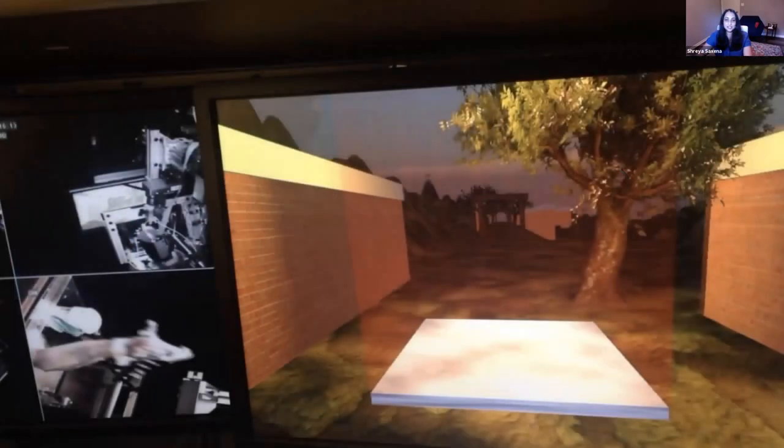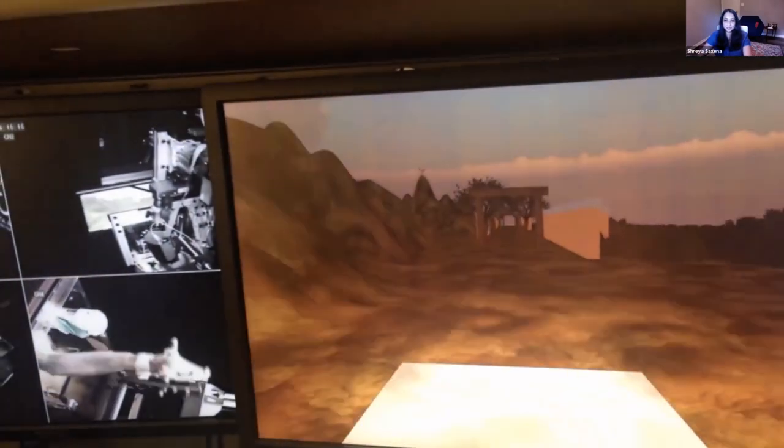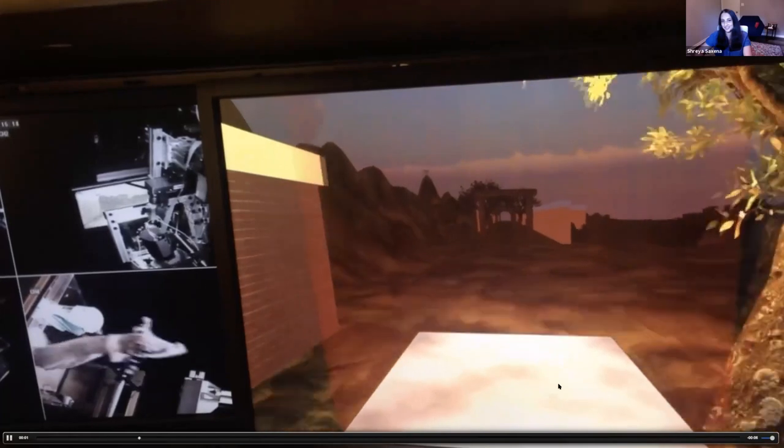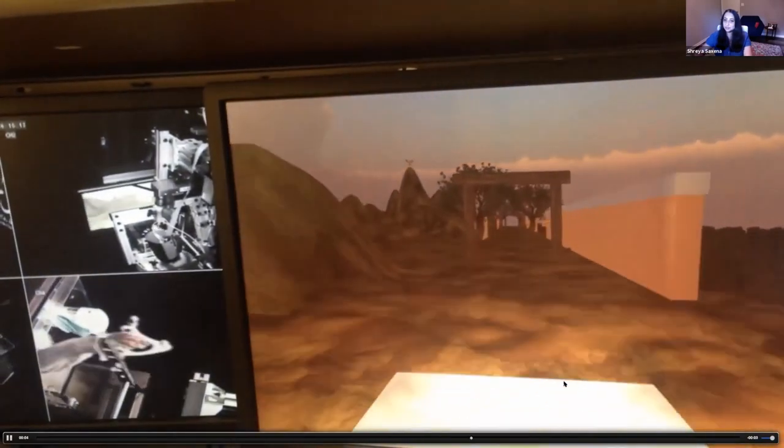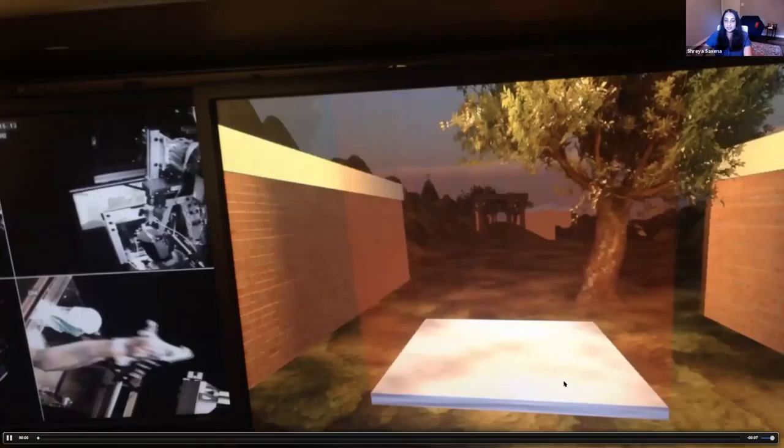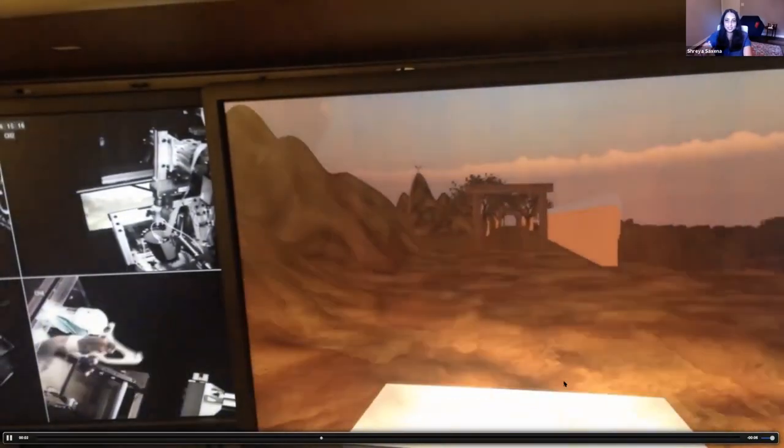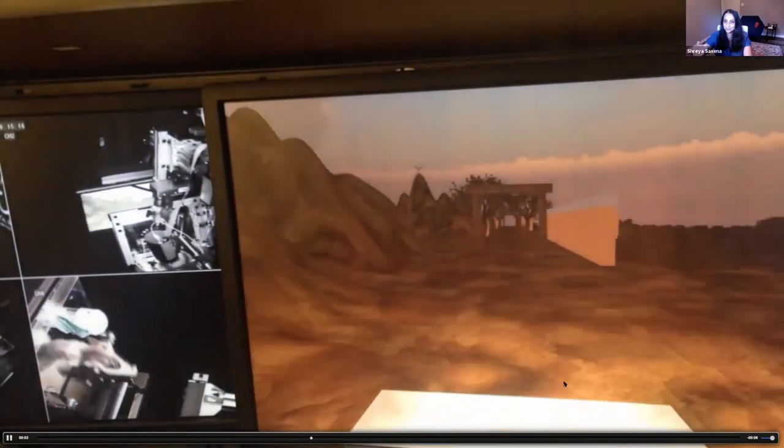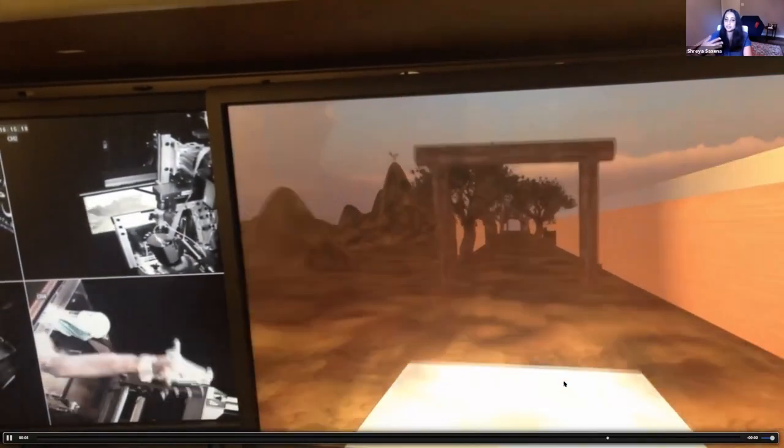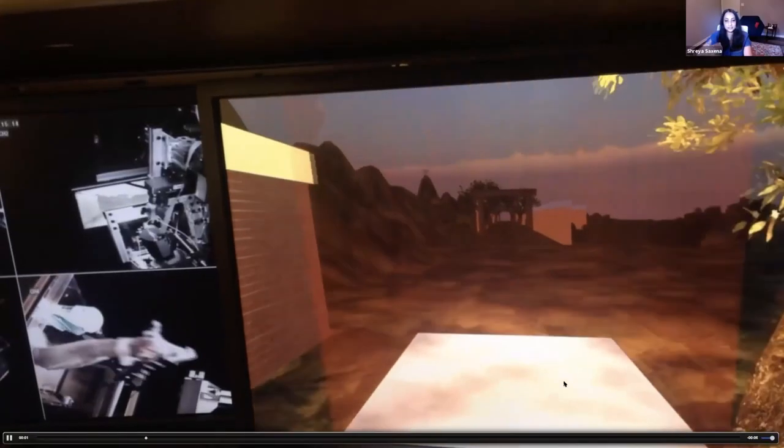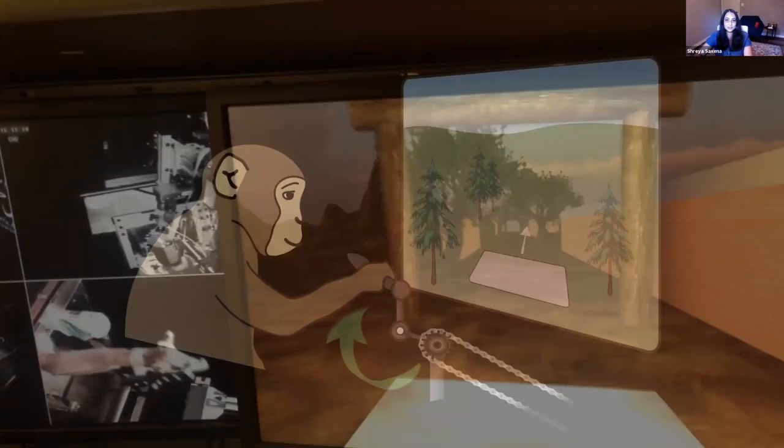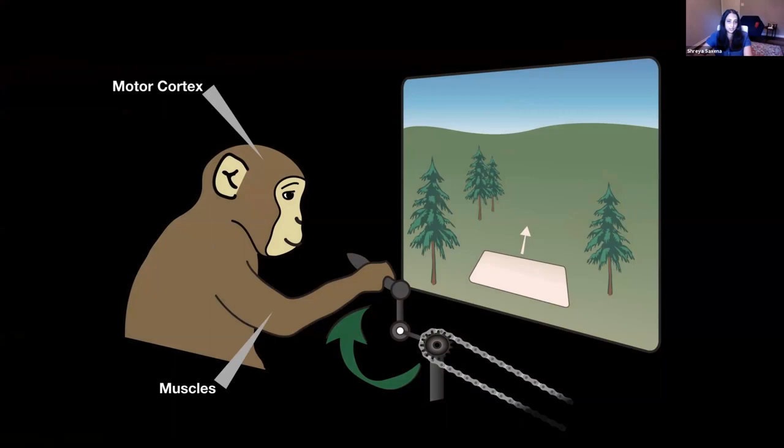So to answer that question, a colleague, Abigail Russo at Columbia in Mark Churchland's lab trained two monkeys to cycle through a virtual environment while tracking the target. You see the target here on the screen. The target was continuously moving at different speeds. And in addition, depending on the color of the landscape, the monkey cycles forwards or backwards to produce the movement. You may be familiar with the cycling task from Abby's 2018 paper. But in that paper, in fact, the monkey was going at a constant speed. And this is, in fact, a different data set, one in which the monkey's speed changes continuously. So at the same time, Abby also recorded single unit neural activity from the motor cortex and intramuscular EMGs, muscle signals.